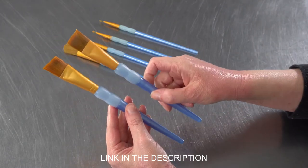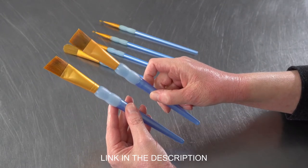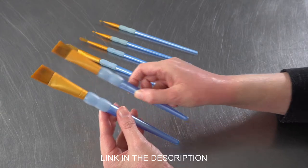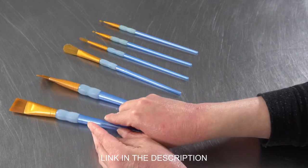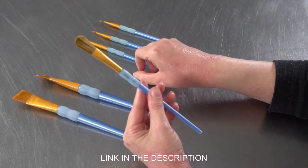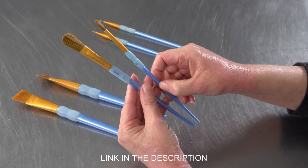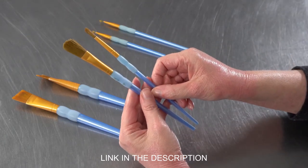So we look for some larger ones, typically flat and angled, some medium-sized, same thing flat, angled, but also some rounds.